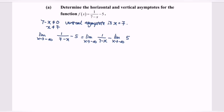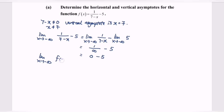If we substitute the value, we will obtain 1 over infinity. As we all know, 1 over infinity will become 0. Next, minus the limit when x is approaching negative infinity for the function 5, and we will have the value 5. So finally, the limit when x approaches negative infinity for f(x), the value of y will be approaching negative 5.